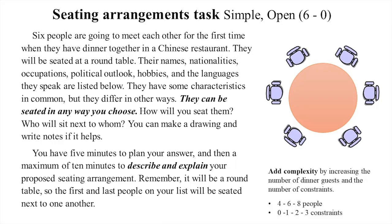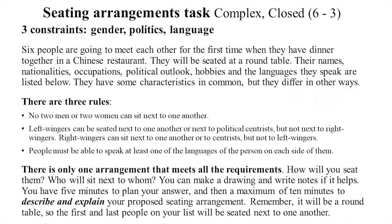We have tested this with geometric figures tasks and other simple things. Here's another example: a seating arrangement task. In the simplest version, there are six seats and no constraints — people are just told you've got six people coming for dinner, seat them any way you like. We can add complexity with versions of four, six, or eight people, with no constraints, one, two, or three constraints. Here's a more complex version with six people and three constraints: no two men or two women can sit next to one another; political left-wingers can sit next to each other or centrists but not right-wingers; right-wingers can sit next to each other or centrists but not left-wingers. You could use any polarizing issue — Real Madrid and Barca supporters, for example.